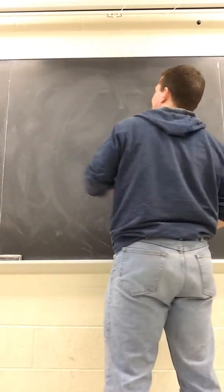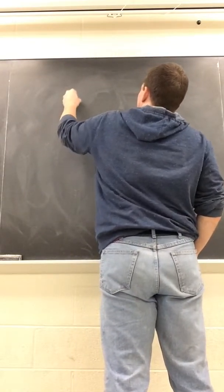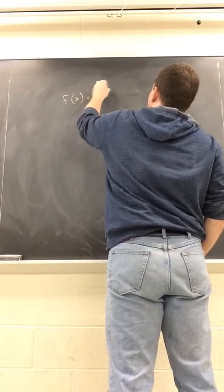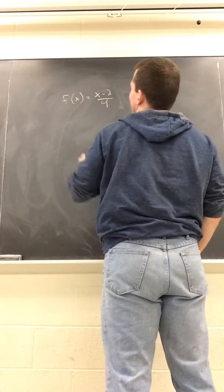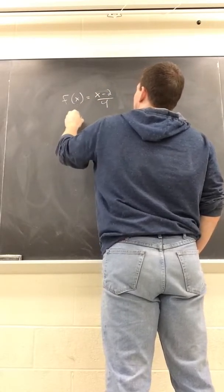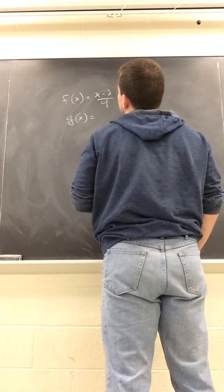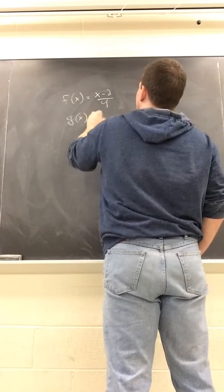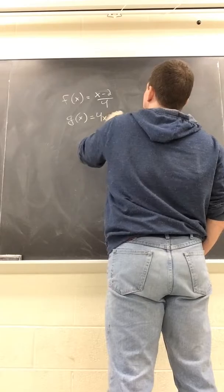So suppose we have f(x) equals x minus 2 over 4 and g(x) equals 4x plus 2.